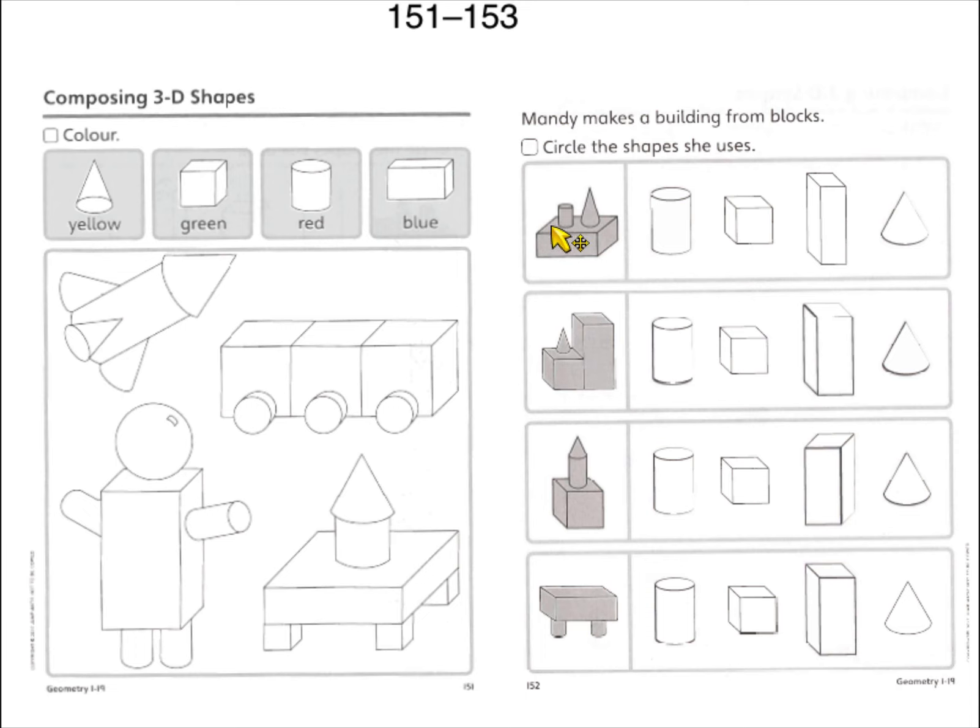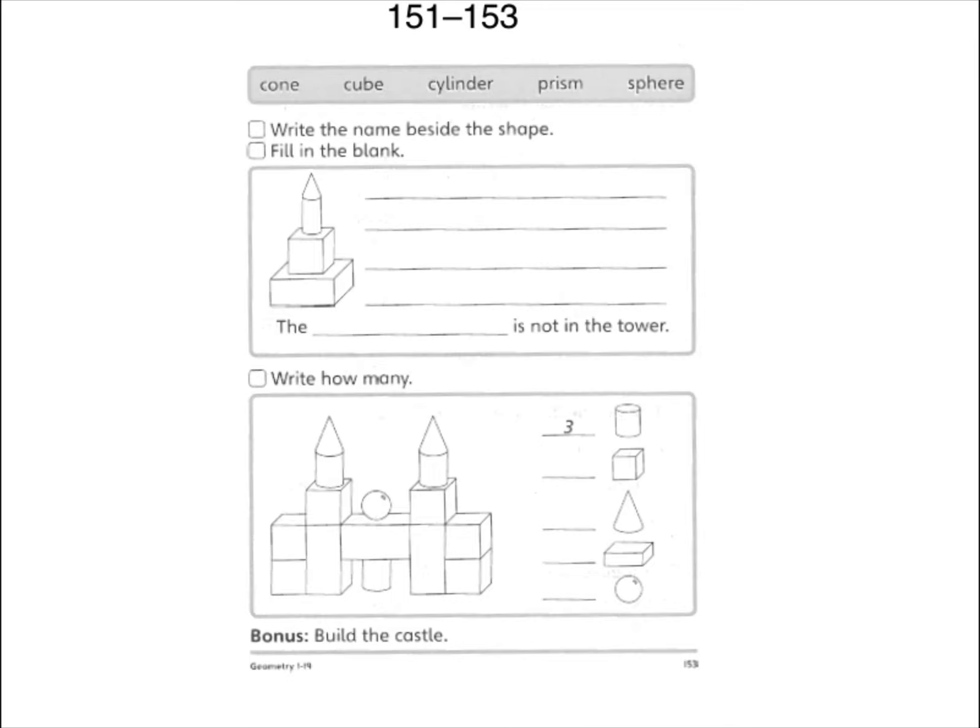Mandy makes a building from blocks. Circle the blocks she's used to build this, this, this, and this. Circle the blocks used in each building. Write the name beside the shape. This is a, I'm going to call it a tower. This is a dumb one. Anyway.